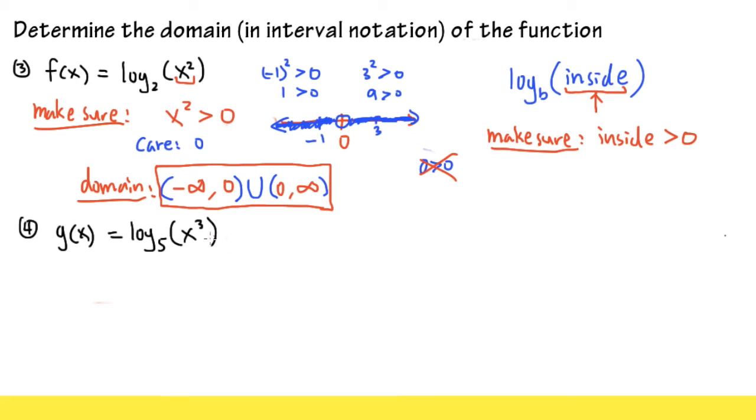And now let's look at this situation, when we have g of x is equal to log base phi of x to the third power. Once again, we are going to make sure that inside, x to the third power, and we have to make sure x to the third power is bigger than zero.